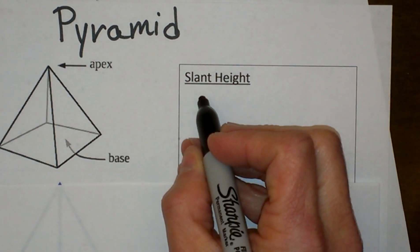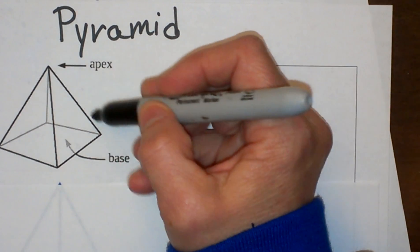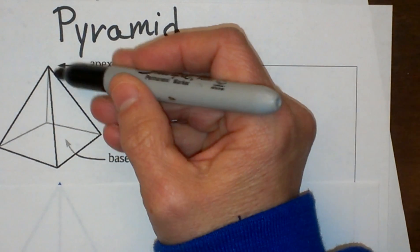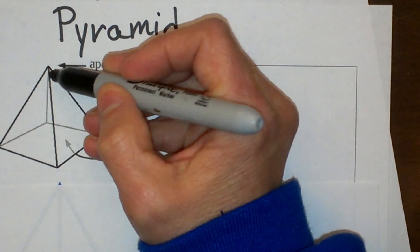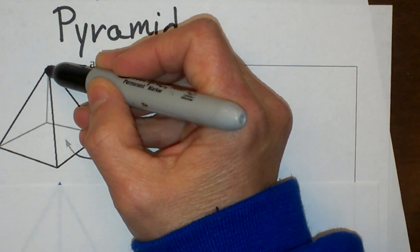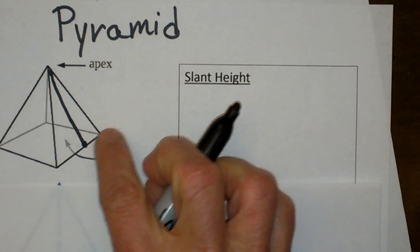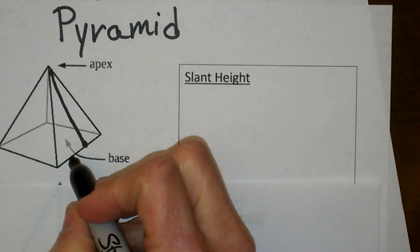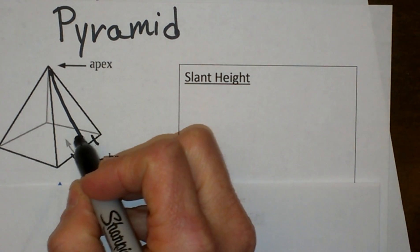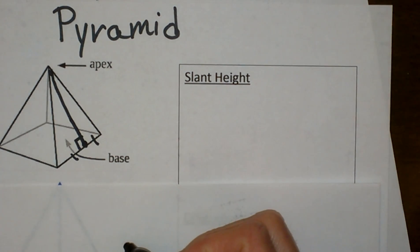So let's define what the slant height is. Well we have an edge right here, and that is actually not the slant height. The slant height is going to be from the apex to the midpoint of this side over here along the base. So that is going to be right at the midpoint to create a right angle.